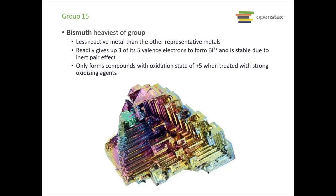Group 15 — we're focusing on bismuth, which is the heaviest of the group. It readily gives up three of its five valence electrons to form Bi³⁺, which is stable due to the inert pair effect. It only forms compounds with a +5 oxidation state when treated with a strong oxidizing agent. The picture shown is a bismuth crystal — it's relatively easy to make at home. You can get impure bismuth on Amazon, melt it down, and let it cool into really cool crystals.